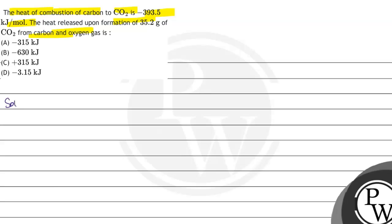First, let's see the key concept is heat of enthalpy. So given that heat of combustion of carbon to CO2, which means C plus O2 produces CO2, and delta H of this reaction is minus 393.5 kJ per mole.